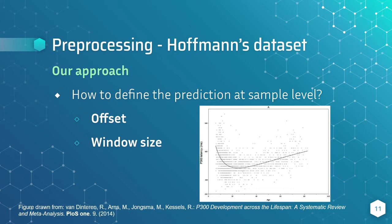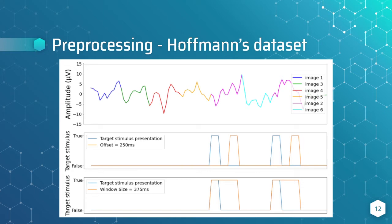To define the classes at each sample, we must consider that we don't know exactly where the P300 happens because of the variability. Therefore, we add two additional hyperparameters in the dataset generation: offset and window size. The offset is the start time of the P300 after the image presentation, and window size is the event duration.